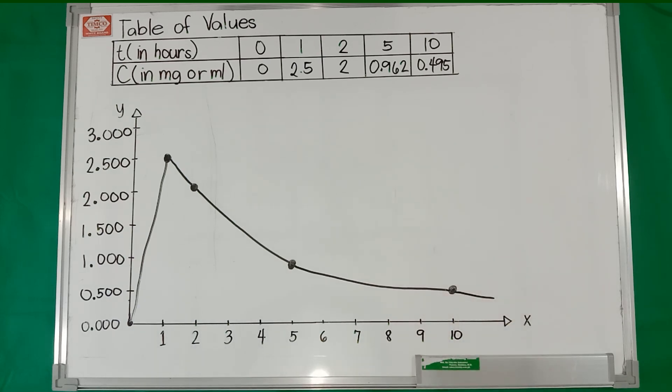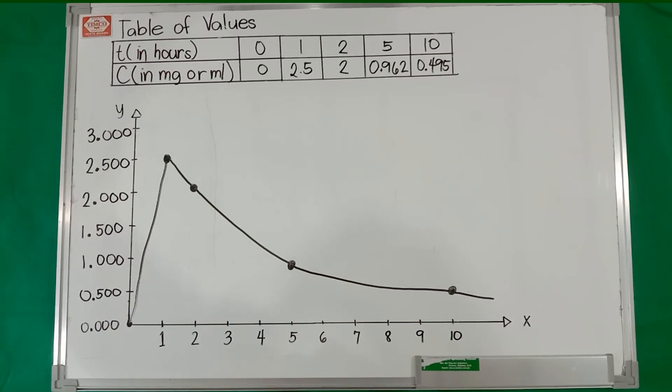There you go. As you can see, the graph indicates that the maximum drug concentration occurs around 1 hour after the drug was administered. Ibig sabihin, after one hour, that's when the drug will work or be absorbed by the patient in their bloodstream. So, the peak is at 1 hour and then it gradually decreases as time goes by.